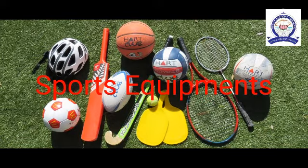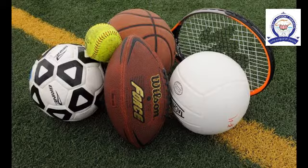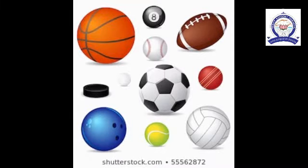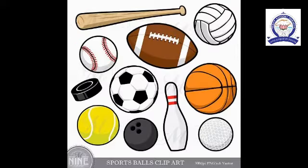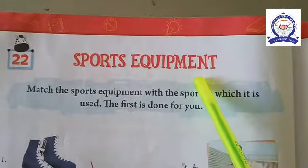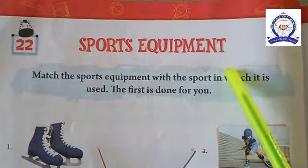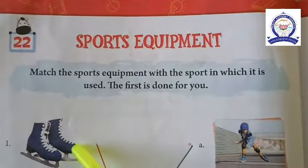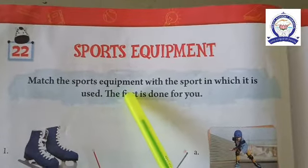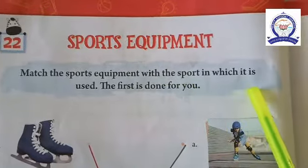Sports Equipment. Sports equipment is a general term for any object used for sport. Examples of sports equipment include balls, bats, rackets, skates, boxing gloves, and so on. Lesson 22: Sports Equipment — match the sports equipment with the sport in which it is used.